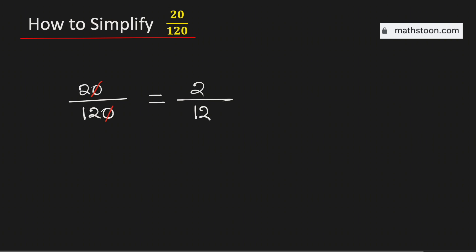Now see that both numbers are even, so they are divisible by 2. To simplify this fraction further, we will divide both the numerator and denominator by 2. As a result, we will get 1 over 6.